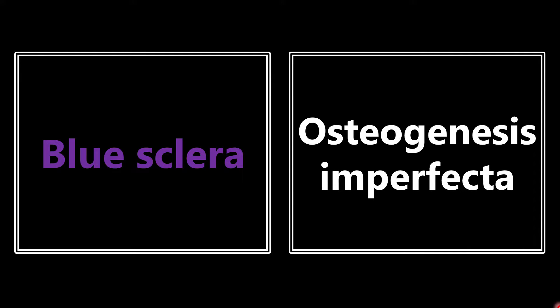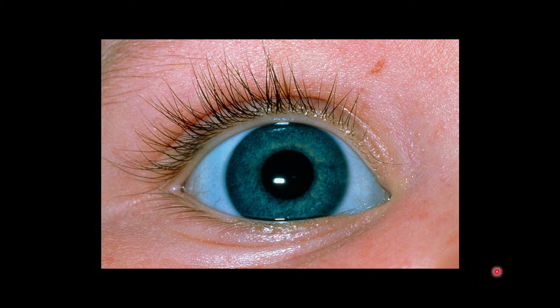The first buzzword is blue sclera. If you see blue sclera on the exam, the association I want you to make is with osteogenesis imperfecta. You can see this bluish hue on the sclera in the image. If they show you that or describe it on the exam, think osteogenesis imperfecta.